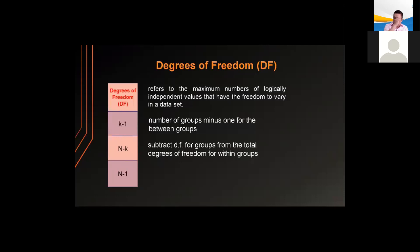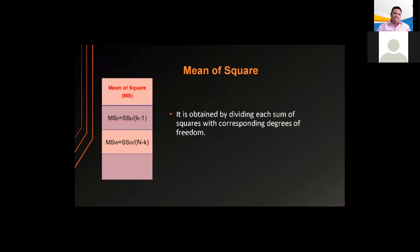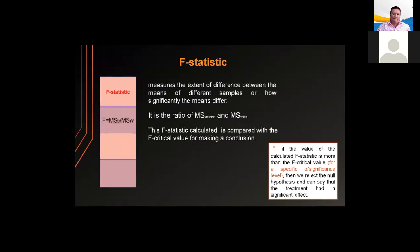The degrees of freedom refers to the maximum number of logically independent values that have freedom to vary in a dataset. For degrees of freedom between groups, it is calculated as the number of groups minus 1. For degrees of freedom within groups, subtract the degrees of freedom for groups from the total degrees of freedom. The mean of square is obtained by dividing each sum of squares by its corresponding degrees of freedom. The F-statistic measures the extent of difference between the means of different samples and is the ratio of mean of square between to mean of square within.